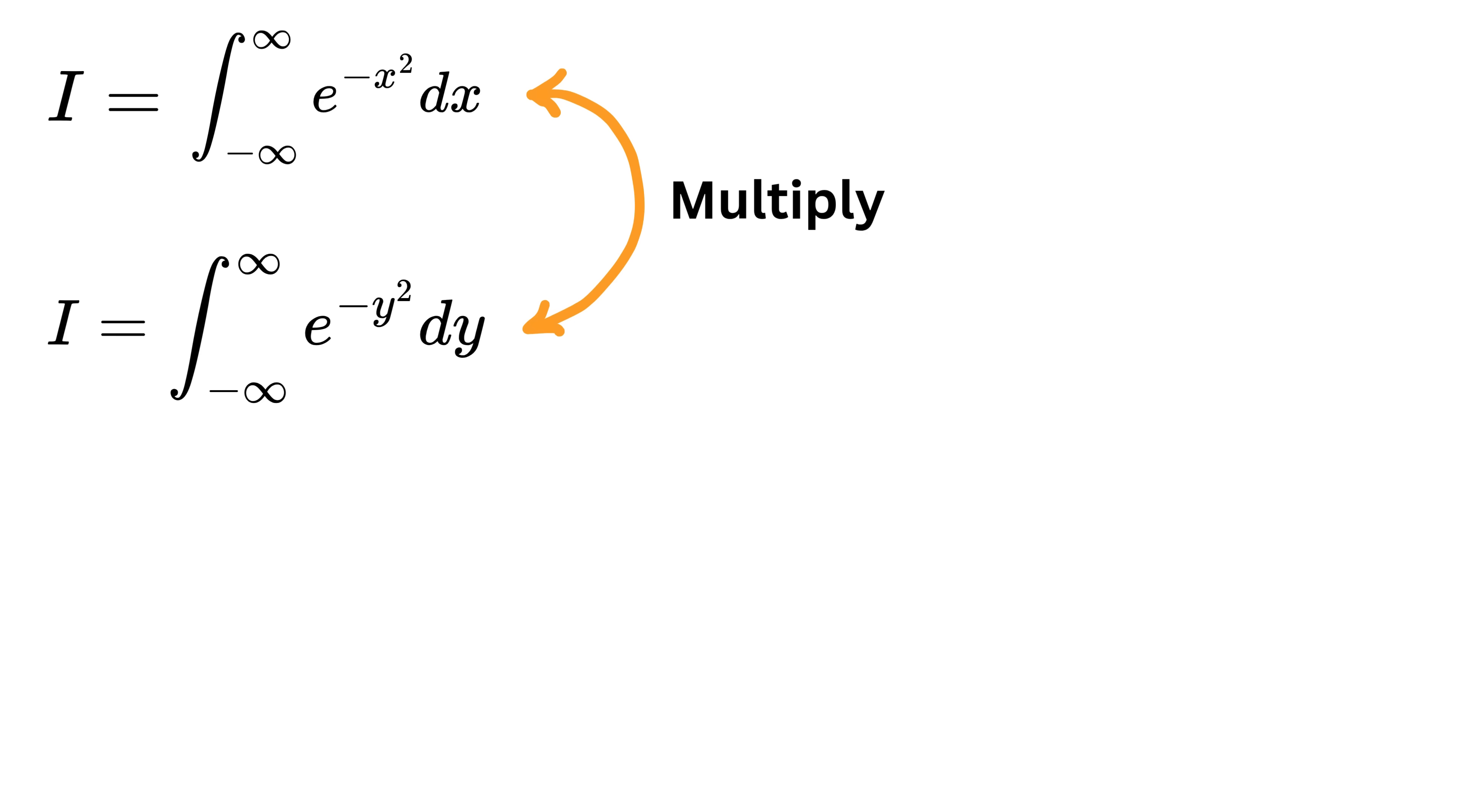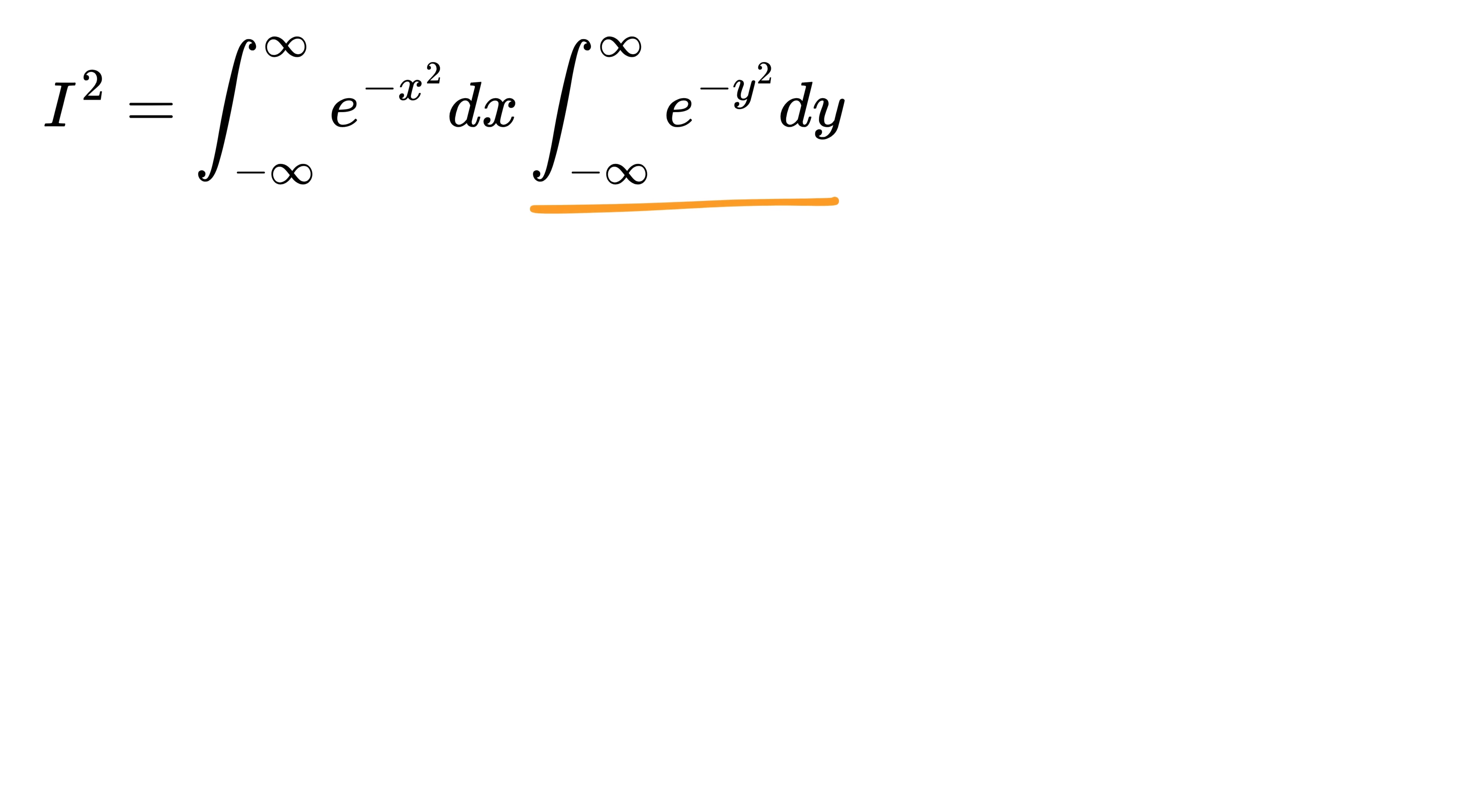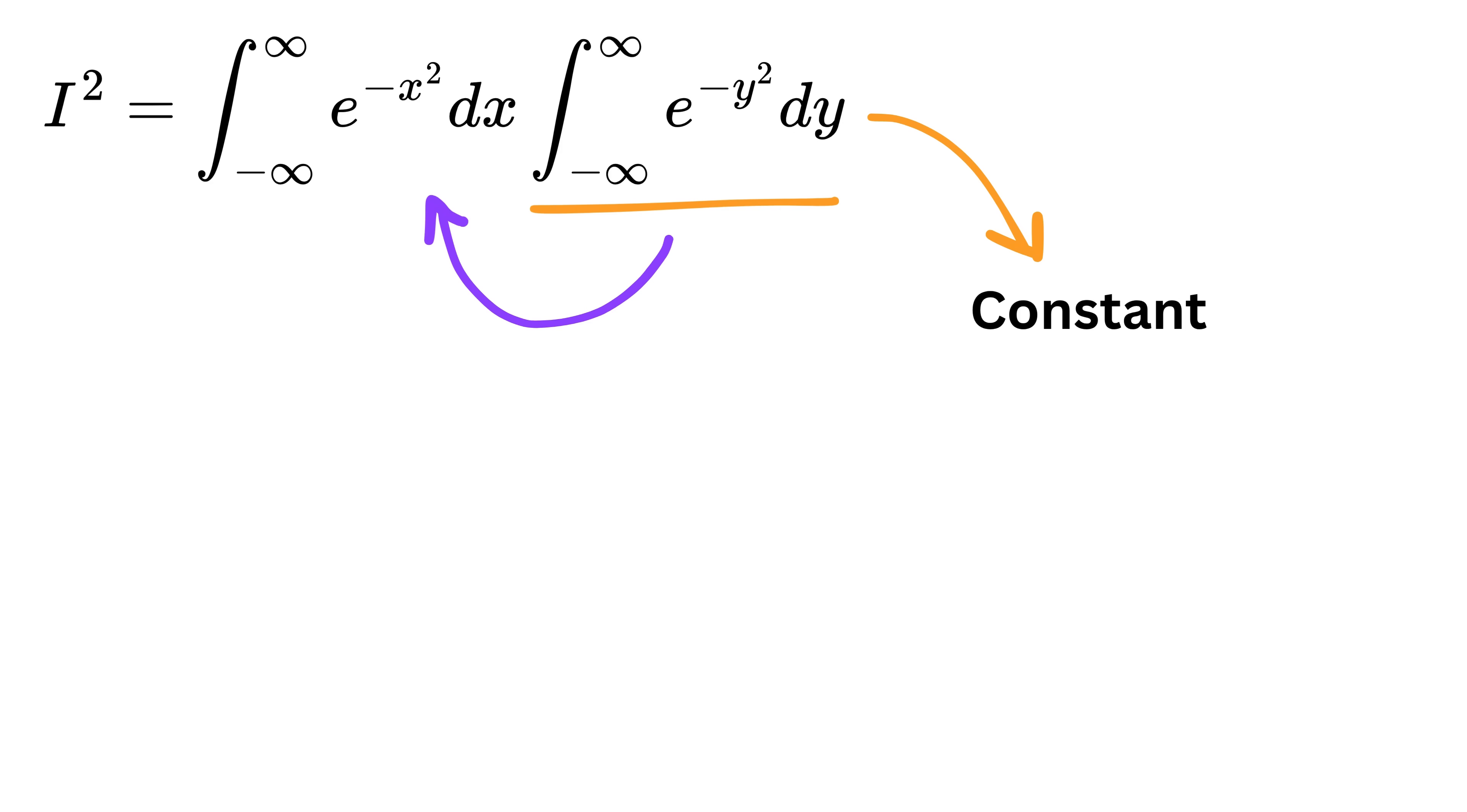Now let us multiply this integral with this integral to get I times I or I squared. Now here comes the first magic. This definite integral in y is just the area under this curve, and in the end it's going to spit out some constant value.